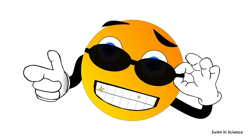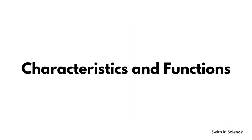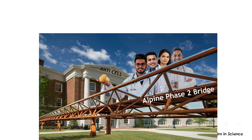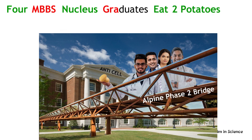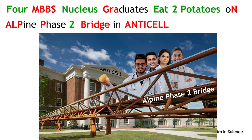Now let us try to remember some important characteristics and functions of these cells through a picture and a sentence. Remember this picture. Here, red color letters act as abbreviations, and green color letters act as connecting letters.